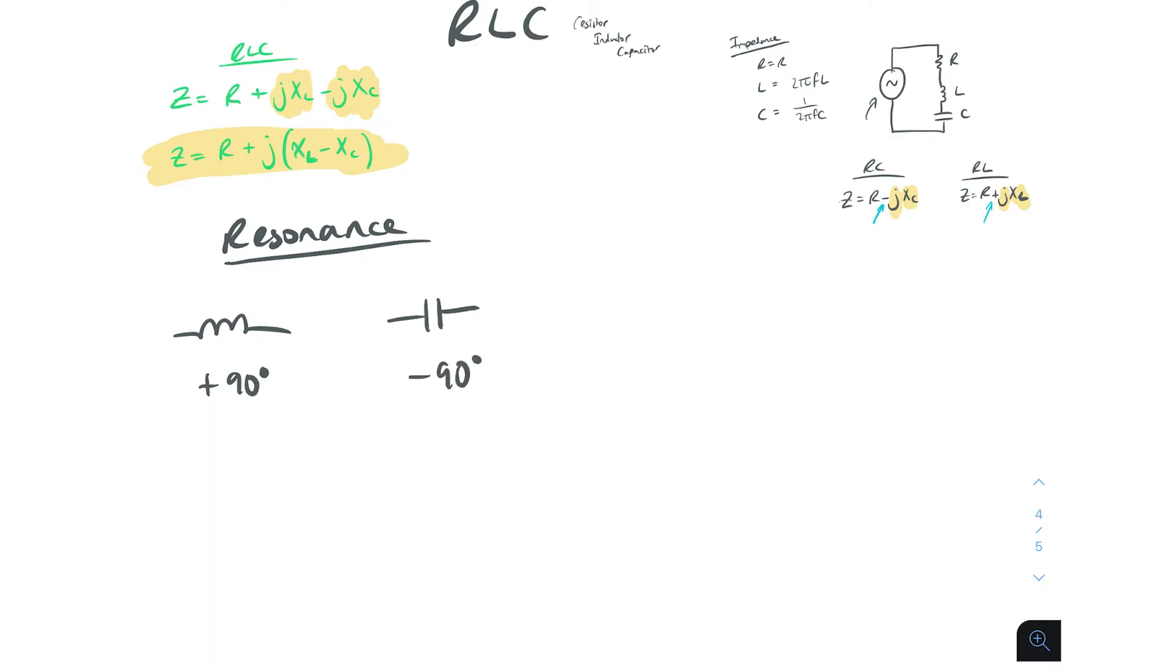Which is why over here we're subtracting for the capacitor and we're adding for the inductor. Because they have a plus 90 degrees phase and a minus 90 degrees phase, if they have different values, this is important to know, they can partially cancel each other out. Now, if they have the same value, this is when they can completely cancel each other out.